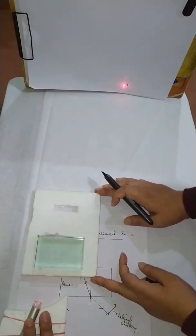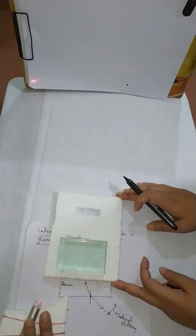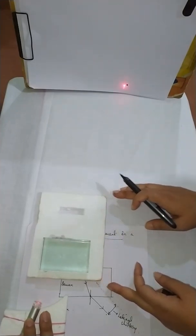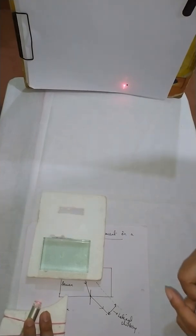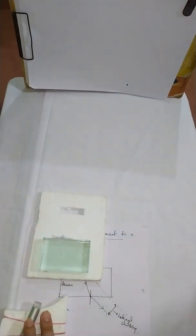Though it is very small, there is shifting. So this is our today's discussion - that is how we can get the lateral shifting or how we can see the lateral shifting or lateral displacement by using a glass slab. Thank you everyone, thank you for watching.